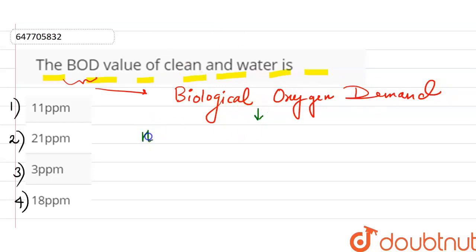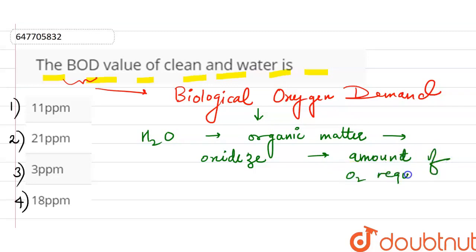Let's suppose whatever organic matter in our water is present - the amount of oxygen required to oxidize that organic matter, the amount of oxygen required, that is what is BOD value. Okay?